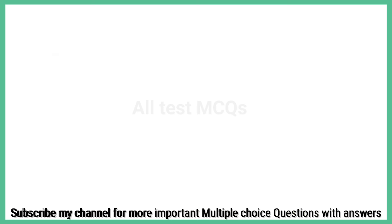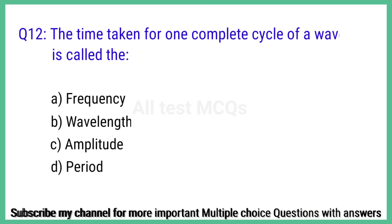Question number 12. The time taken for one complete cycle of a wave is called? The right answer is option D: Period.